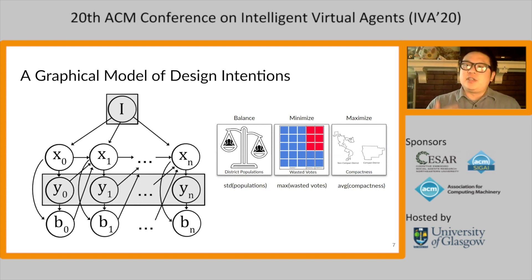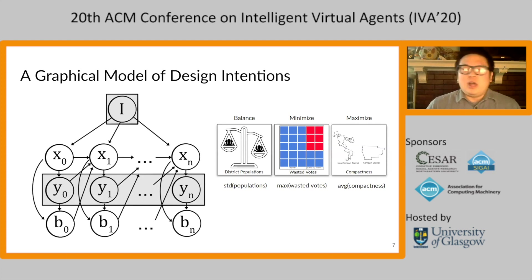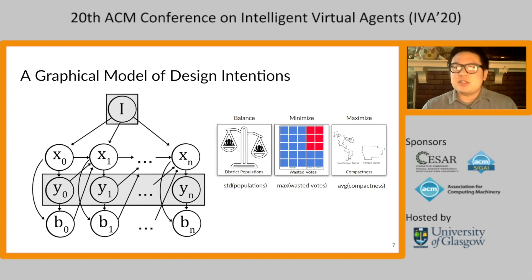If we fix I, this becomes a supervised learning problem. Design outcomes are easily observable, so we frame the problem as predicting what the fixed intentions I are based on a sequence of design outcomes Y_0 to Y_n. More concretely, we measure the three outcomes — population balance, wasted votes, and compactness — by aggregating over districts, so each Y is a three-vector. By observing a sequence of these outcomes during the design process, we try to predict whether the human intends to balance population, minimize wasted votes, maximize district compactness, or some combination of the three.